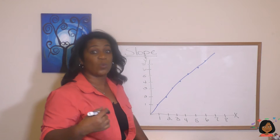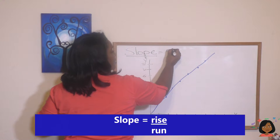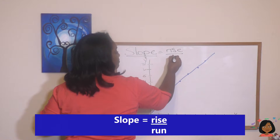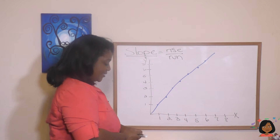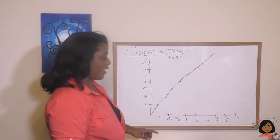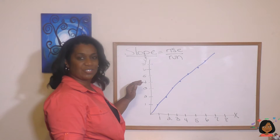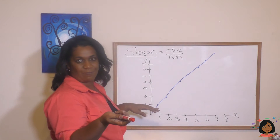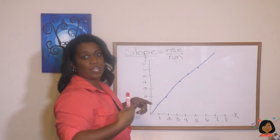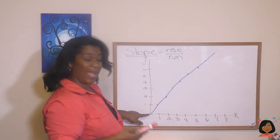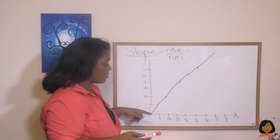How do you put a number to your slope? We actually have a formula for it and it is called rise over run. We're looking at a line and we're going to figure out how much this line is going up — that's the rise — and then how much it's going over — that's the run. When we rise we go up; when we run we go side to side.